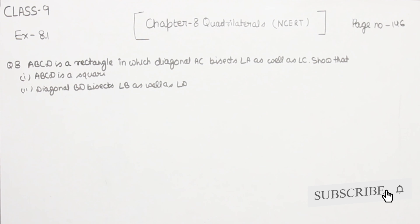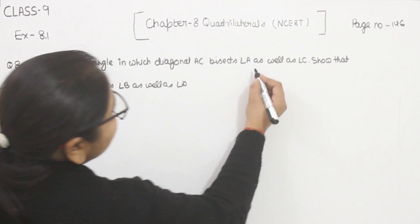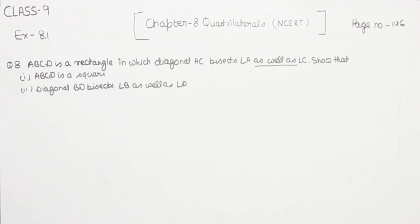Hello everyone, this is Preeti. We are here with another question of Exercise 8.1, page number 146, question number 8. ABCD is a rectangle in which diagonal AC bisects angle A as well as angle C. Show that ABCD is a square, and second, the diagonal BD bisects angle B as well as angle D.